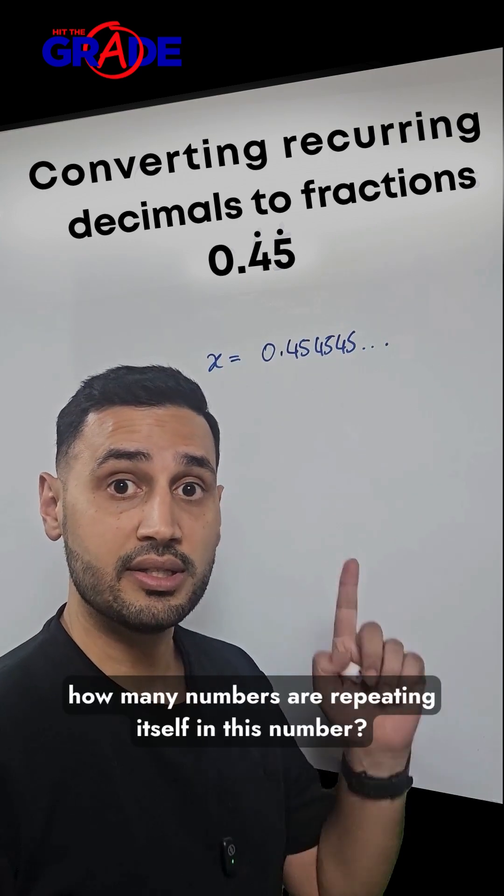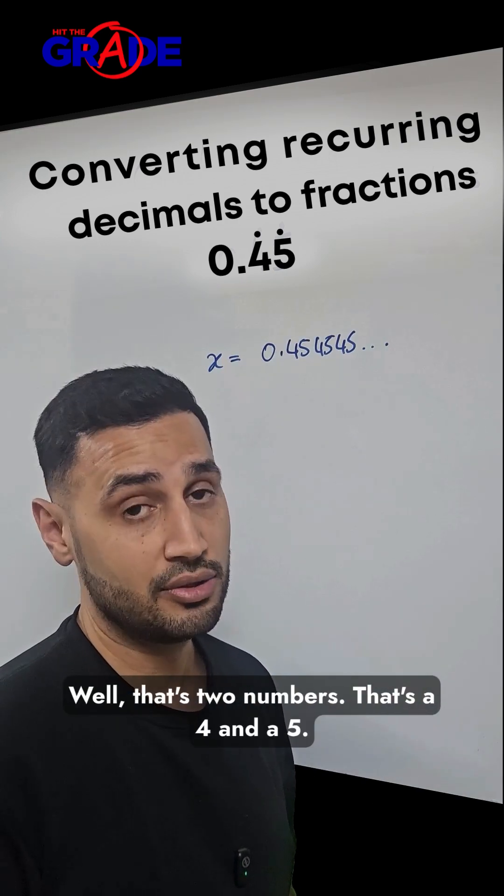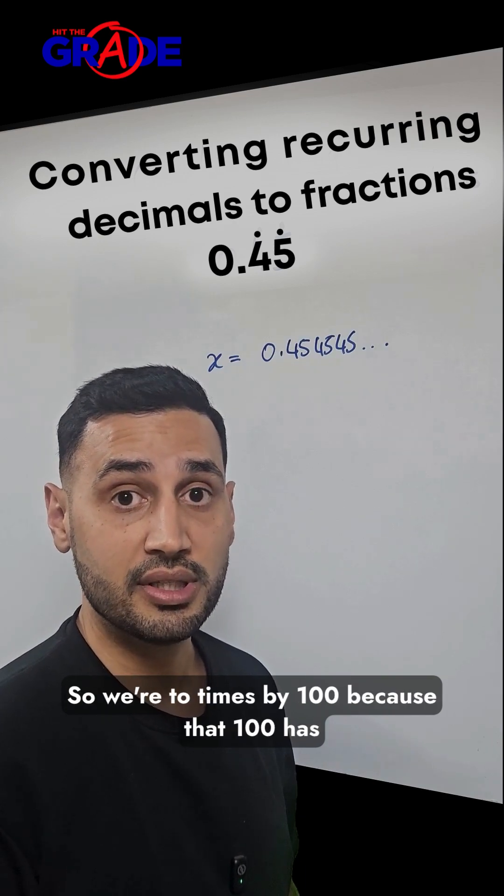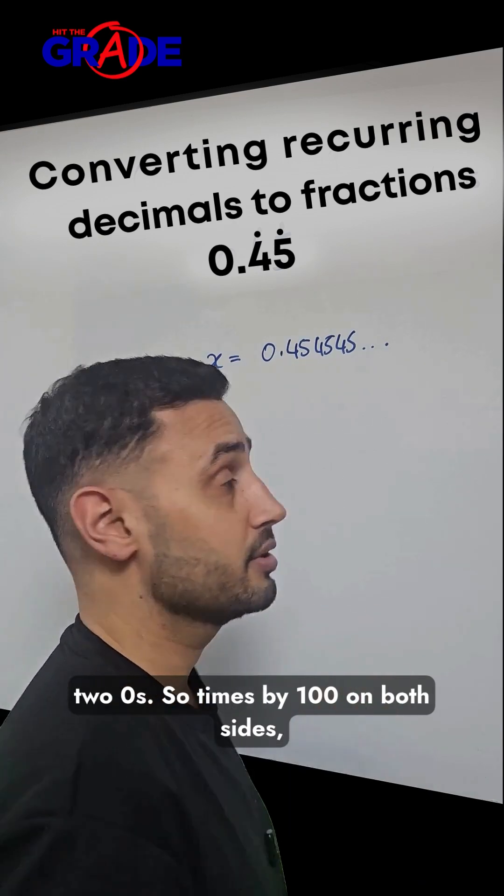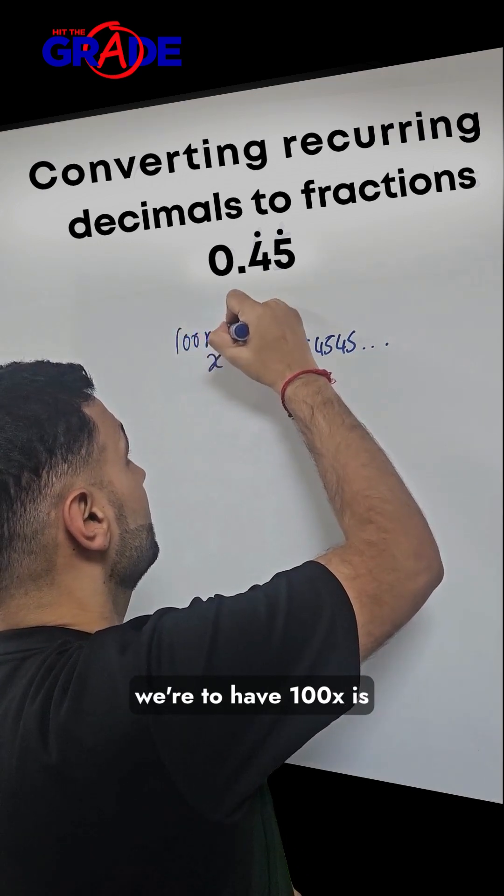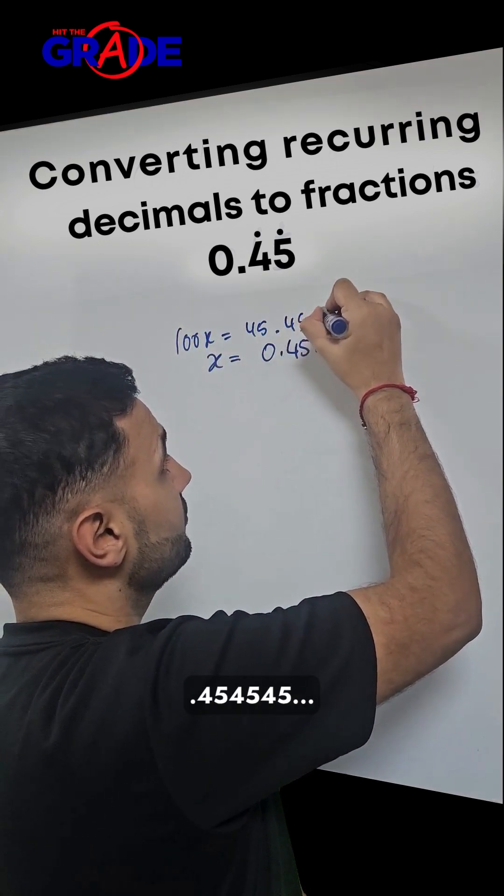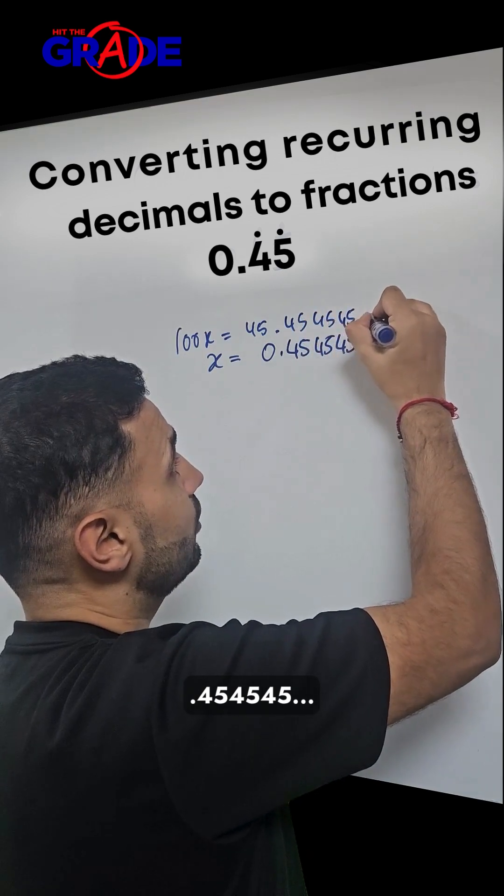Now, how many numbers are repeating in this number? That's two numbers, a 4 and a 5. So we're going to multiply by 100 because that 100 has two zeros. Multiplying by 100 on both sides, we have 100x equals 45.454545 dot dot dot.